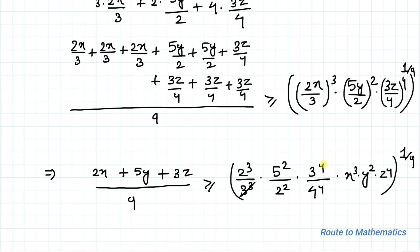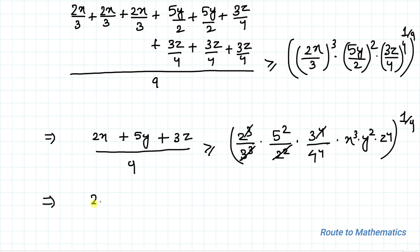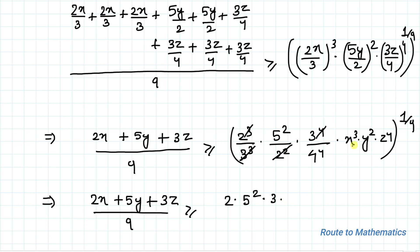Now we simplify: we have 3³ in the denominator and 3⁴ in the numerator — canceling gives 3. We have 2³ in the numerator and 2² in the denominator — canceling gives 2. Also, 4⁴ = 2⁸, and together with the remaining factor of 2, we get 2⁷ in the denominator after cancellation. This implies (2x + 5y + 3z) / 9 ≥ [2 × 5² × 3 × 7 / 2⁸]^(1/9).